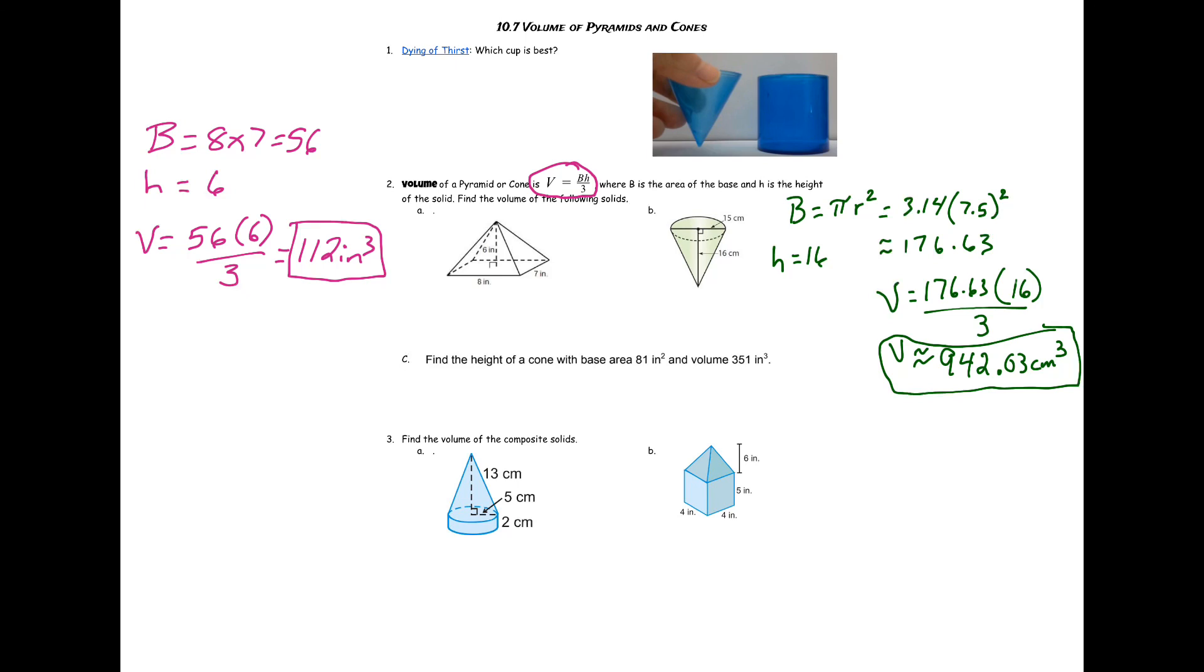And c: find the height of a cone with base area 81 and volume 351. So here you just want to use our formula and then plug in the information you know. 351 is equal to our area of the base, which is 81, times h, which is what we're solving for, divided by 3.